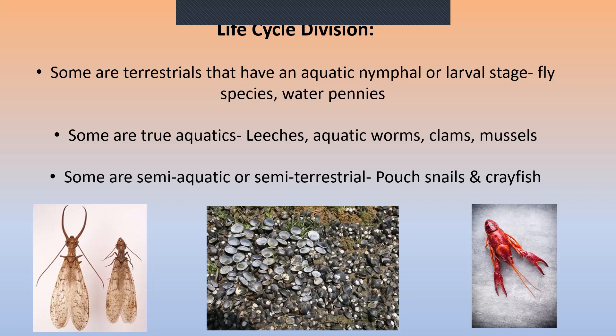An interesting thing about crayfish: they create a tunnel home that starts on the banks of a stream under the water, or on the banks of a pond or lake. They can tunnel up to 30, 40, even 50 yards, at which point they tunnel upward and make themselves an exit hole. If you're walking near a stream and you see a hole about two or three times the size of your thumb with mud piled around it, that is the end of a crayfish tunnel coming up on land.